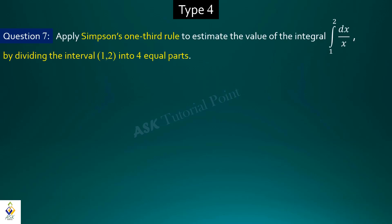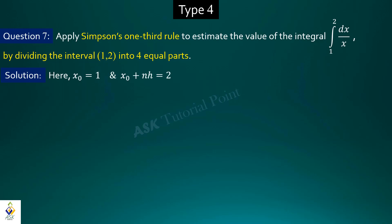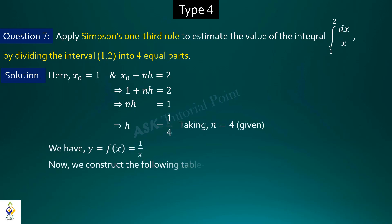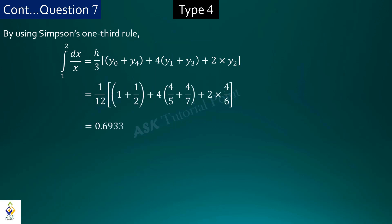Next is another type 4 problem — question number 7. Apply Simpson's one-third rule to find the value of the integration from 1 to 2 of (1/x) dx, dividing the range into 4 equal parts, meaning n equals 4. Here x0 equals 1, x0 plus nh equals 2, and with n equals 4 we get h equals 1/4. Constructing the table with equidistant x values and applying Simpson's one-third rule, the calculation gives the answer 0.6933.